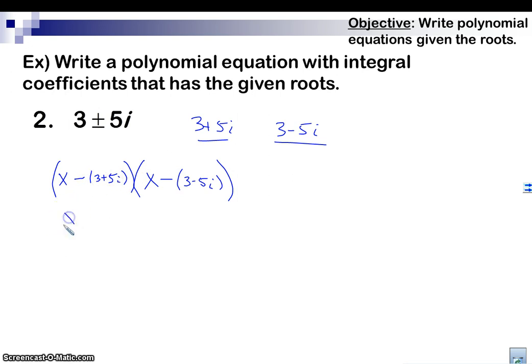So now I got to distribute that little negative here. So minus 3, minus 5i, because I got to distribute the negative. x minus 3 plus 5i, because again, I have to distribute this negative in here.